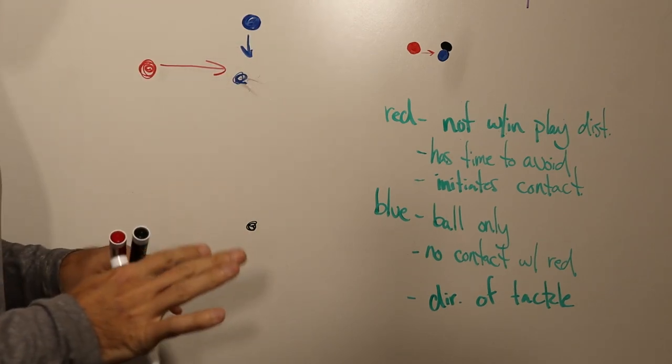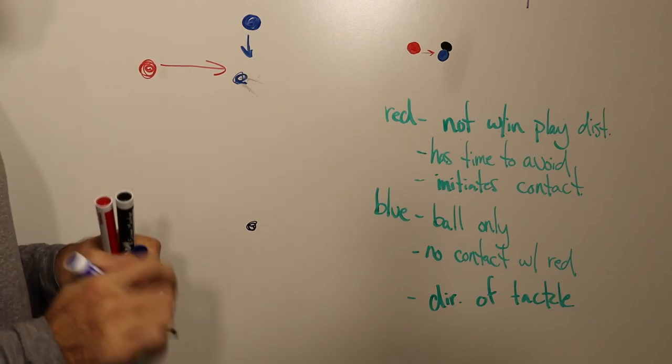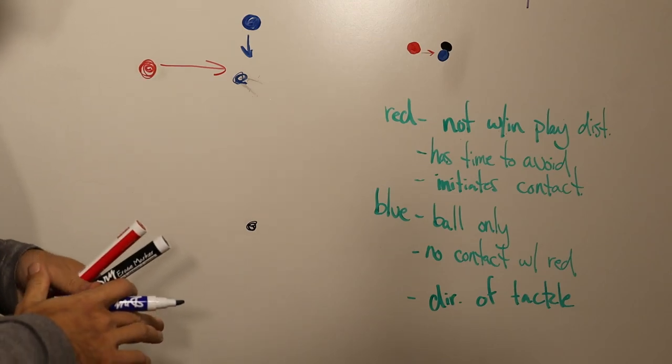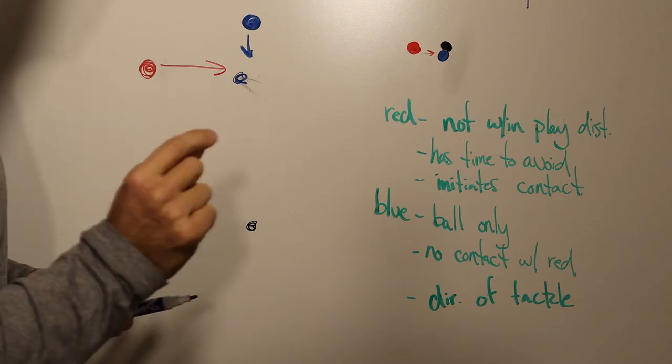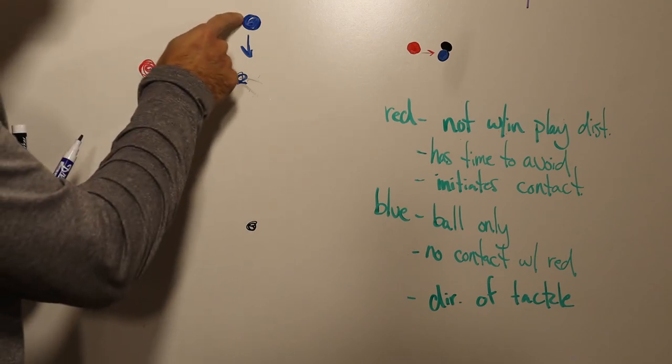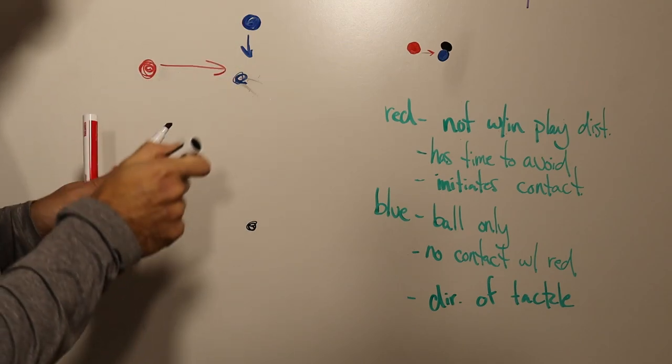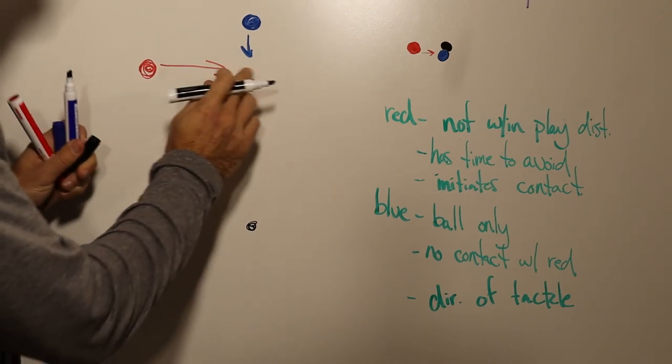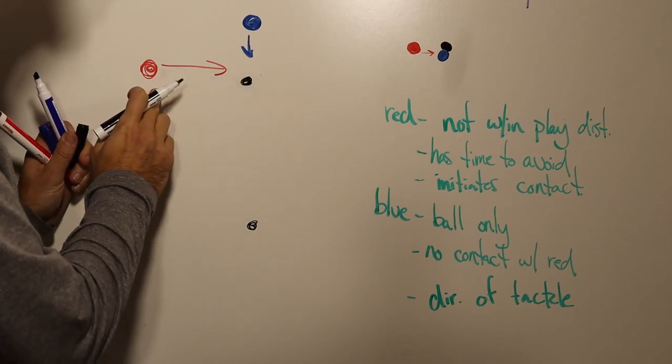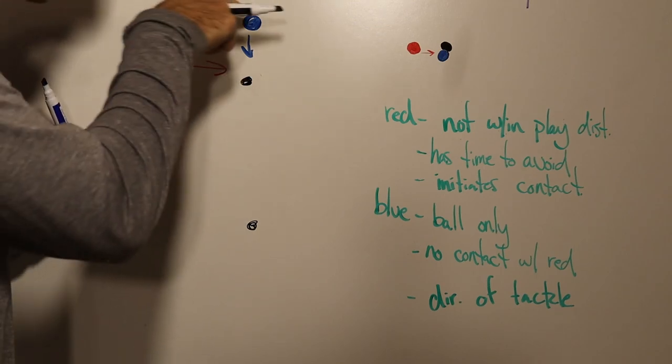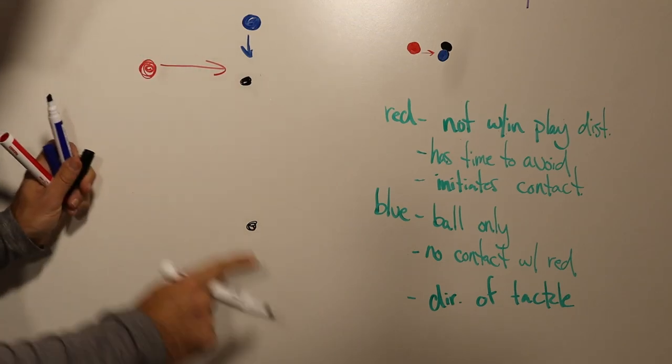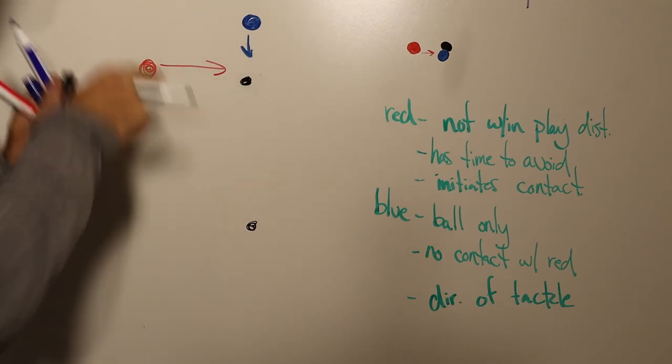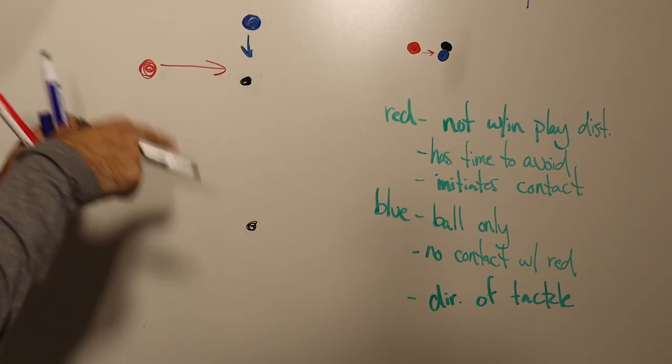In this situation, I think we'd all agree that this is not a tripping foul. And why not? Well, at the moment guys that blue tackles the ball, at that moment, red is not within playing distance of the ball. Red can see blue coming in and red has time to avoid the contact with blue.